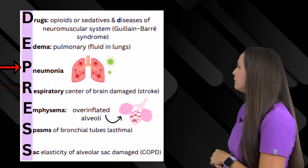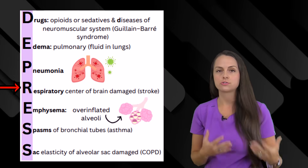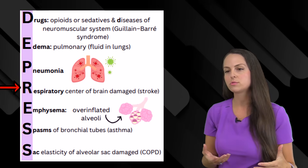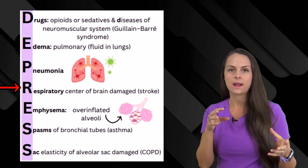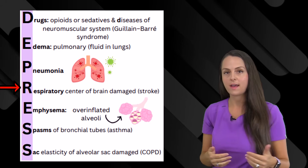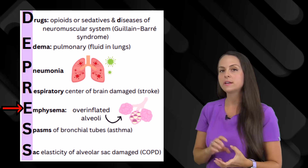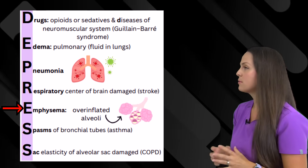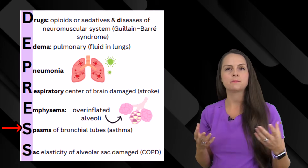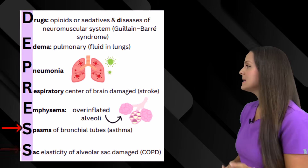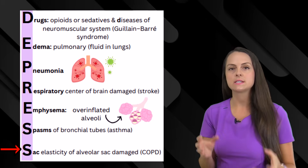R is for the respiratory center of the brain being damaged. This can occur in patients who have experienced a stroke. Your breathing rate is controlled a lot in your brain, and if someone has had ischemia to parts of their brain that control respiratory rate, it can affect how well they're able to ventilate. E is for emphysema — the patient has overinflated alveoli sacs, impairing gas exchange. S is for spasms of the bronchial tubes, like in asthma — again impairing gas exchange. And lastly, sac elasticity — alveolar sacs are damaged — in patients who experience COPD.